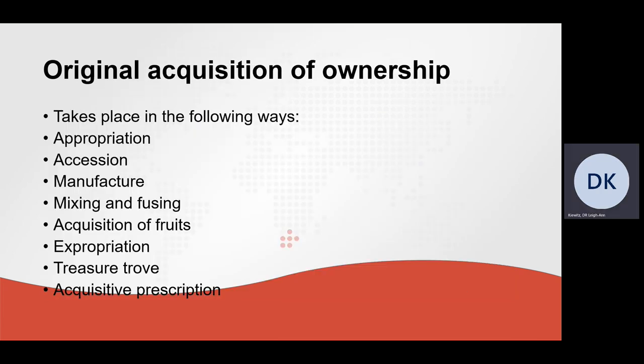Examples of original acquisition of ownership are: appropriation, accession, manufacturing, mixing and fusing, acquisition of fruits, expropriation, treasure trove, and acquisitive prescription. We will now focus on each of these examples individually.